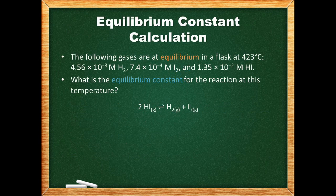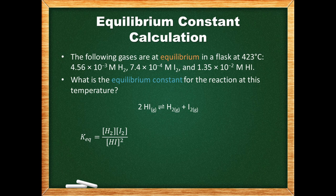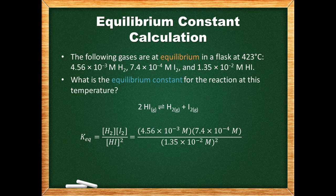Now let's actually go about calculating an equilibrium constant. Here we have three gases which are at equilibrium and their concentrations. Notice how these are the concentrations at equilibrium, so we are good to use these directly in our equilibrium expression. We begin by writing down the equilibrium expression. The hydrogen iodide has a coefficient of 2 in the balanced chemical reaction, so its concentration is raised to the power of 2. Now we can insert the equilibrium concentrations into the expression. We don't include the units of the equilibrium constant in this course because they vary too much from equation to equation to be useful.